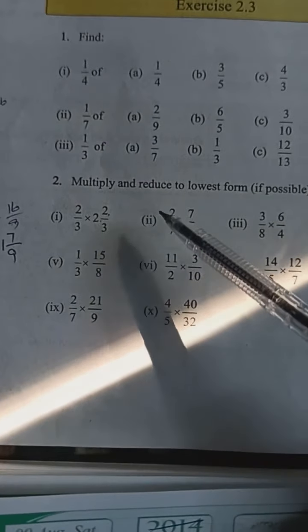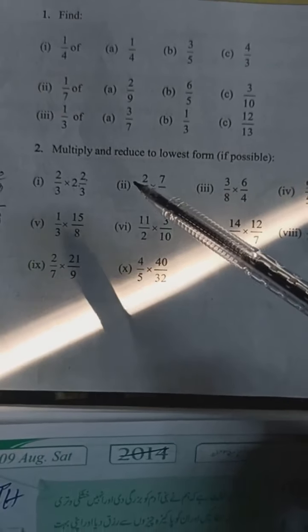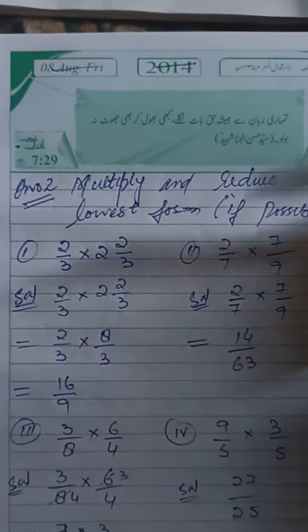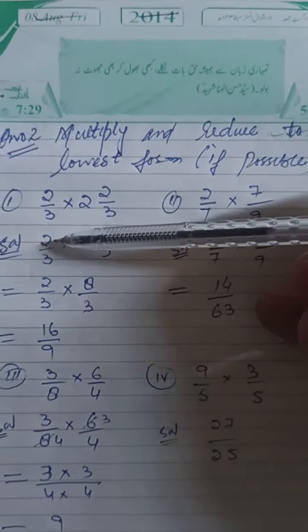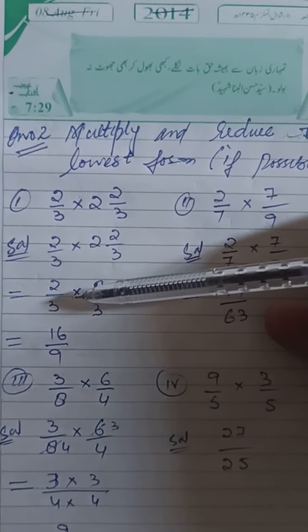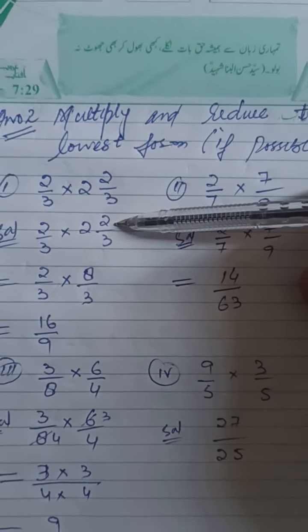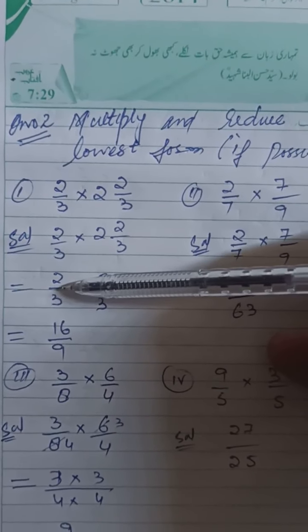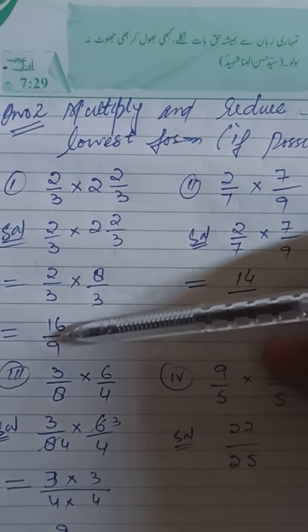Question number 2 is Find and reduce to the lowest form if possible. 2 by 3 into 2, 2 by 3. 2 by 3 is 2 times 3. This is a mixed fraction. Convert. 2 times 3 is 6, 6 plus 2 is 8 by 3. 2 by 3 into 8 by 3. 1 by 3 is the same. 2 by 8 is 16, 3 by 3 is 9. 16 by 9.